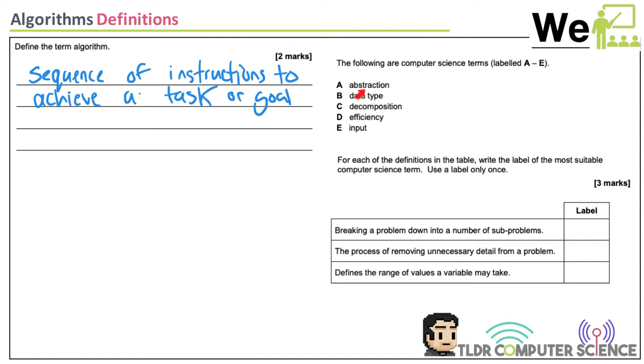Abstraction is when you remove unnecessary detail to let you focus on what's important.